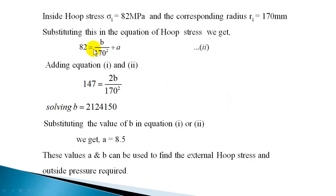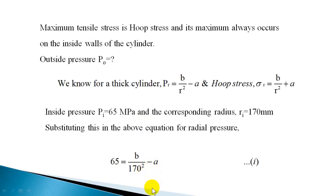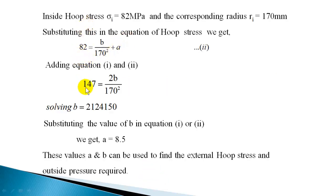So when radius is 170 you get another equation. Now you have one equation on pressure with a minus sign, and another equation on hoop stress with a plus sign. Adding these two equations, A will get cancelled and you will get an expression for B. Adding equations 1 and 2: 82 + 65 = 147, which equals 2B/170². Both have B/170² terms, so A cancels. From this you can solve for B.